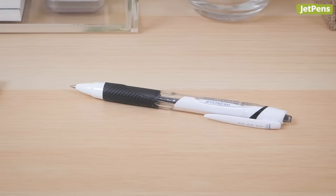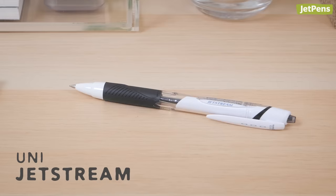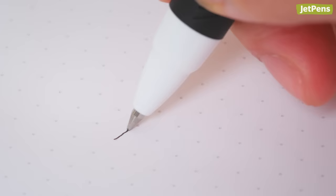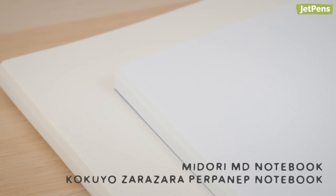Known for its exceptionally smooth ink, the Uni Jetstream is our favorite and most popular ballpoint pen. Its richly pigmented ink is one of the smoothest ballpoint inks we've tried. It's so smooth that we actually recommend using it with slightly more textured paper, like Midori MD paper or Kokuyo Zara Zara Purpanep notebooks.